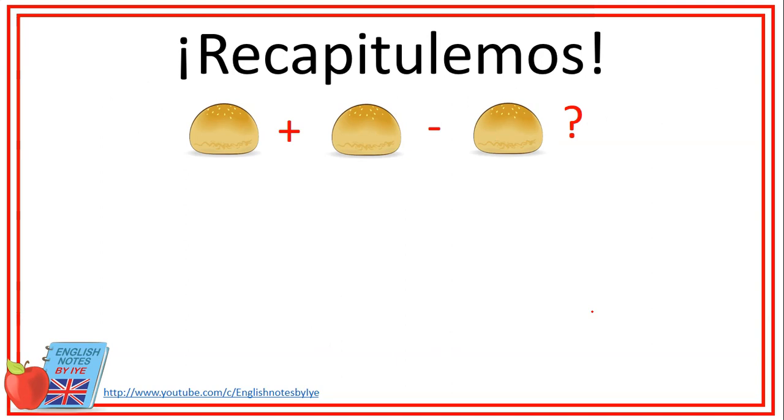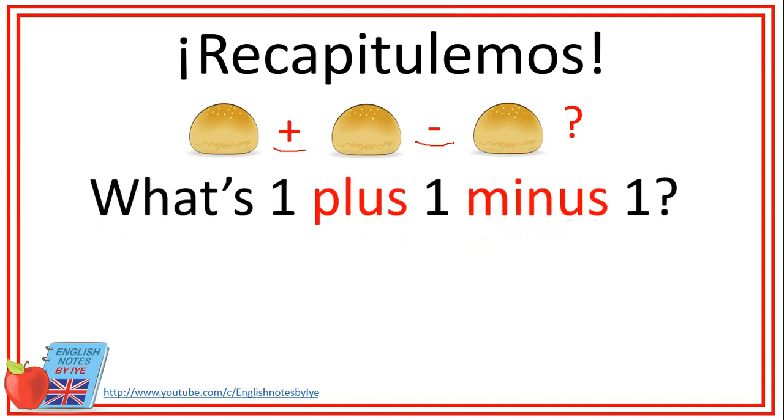Bueno, vamos a recapitular lo que vimos en la clase de hoy. Vimos el símbolo más, que en inglés es plus, el símbolo menos, que en inglés es minus, y cómo lo podemos utilizar. Por ejemplo, en la pregunta, what's 1 plus 1 minus 1? Y vimos que para decir las respuestas podemos decir it's 1 o podemos decir equals 1.